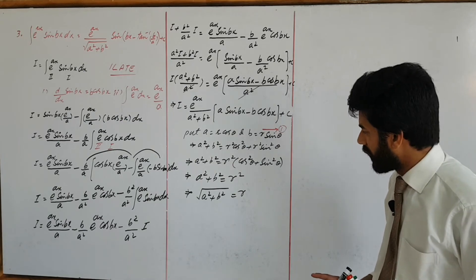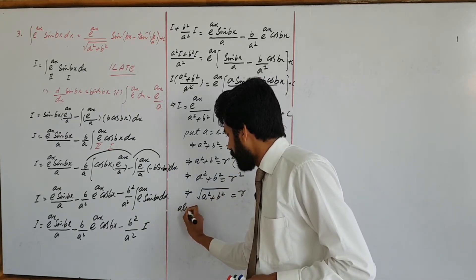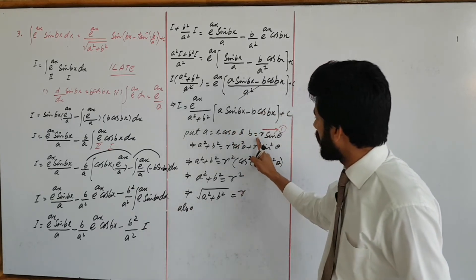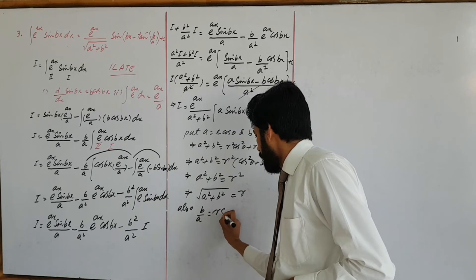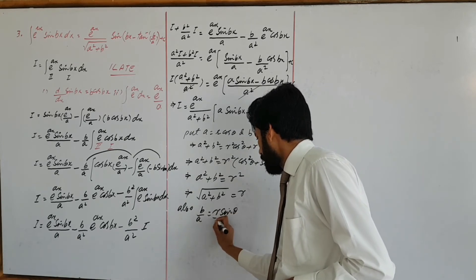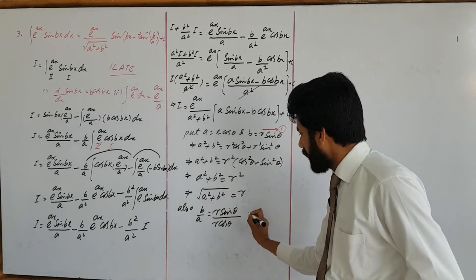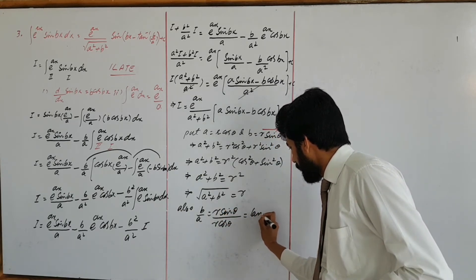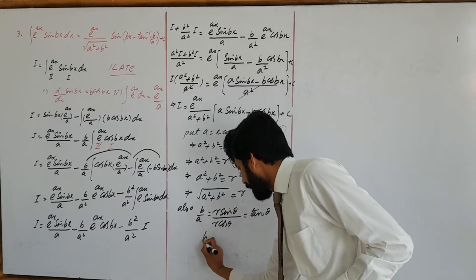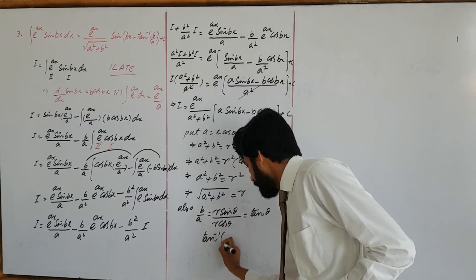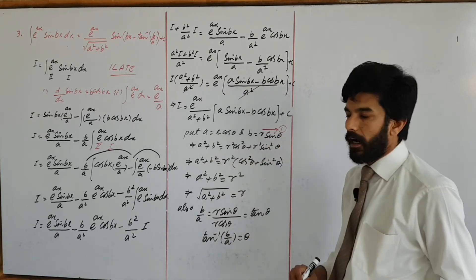Now calculate theta: divide second by first — b over a equals R sin theta upon R cos theta, which equals tan theta. So tan theta equals b over a, which gives theta equals tan inverse b over a.